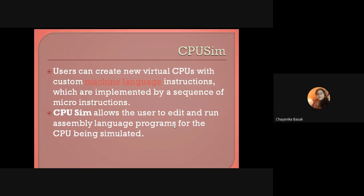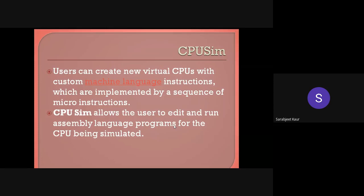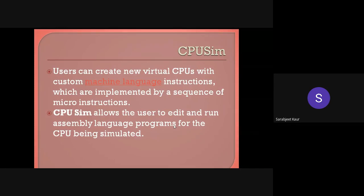Users can create new virtual CPUs with custom machine language instructions, which are implemented by a sequence of micro instructions. CPU Sim allows the user to edit and run assembly language programs for the CPU being simulated. I will discuss in detail what a micro instruction is versus a machine instruction, and we'll see how to develop ALP — assembly language programs — using machine instructions, which are in turn developed using micro instructions.